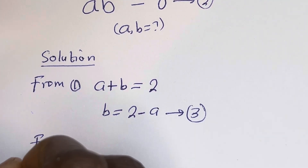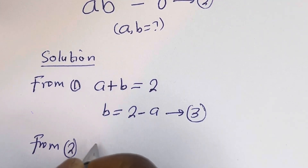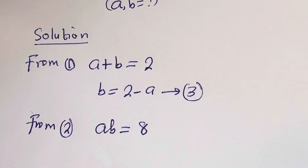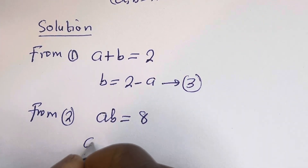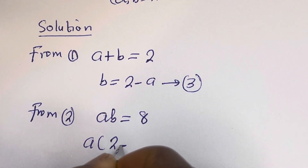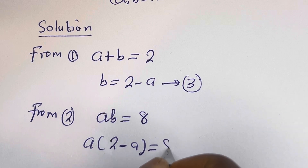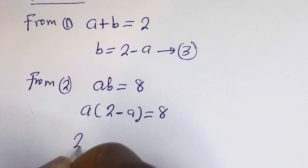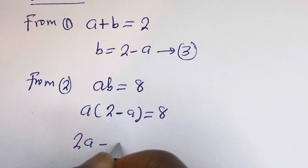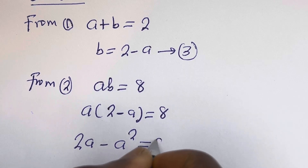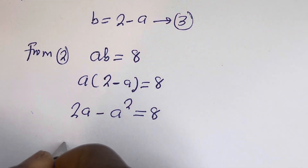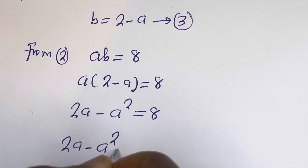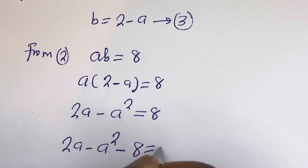Also, from equation 2, ab is equal to 8. Then let's substitute for b. We have a times (2 minus a) is equal to 8. Let's open the bracket: a multiplied by 2 is 2a, minus a multiplied by a, which is a squared, is equal to 8.